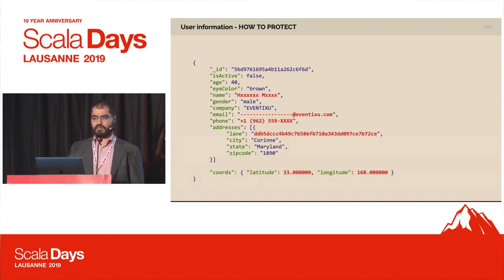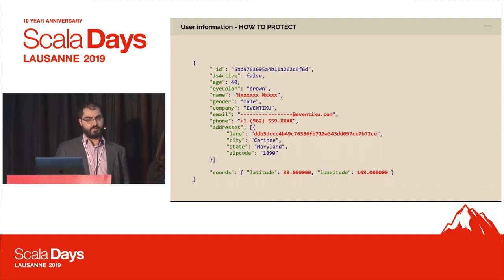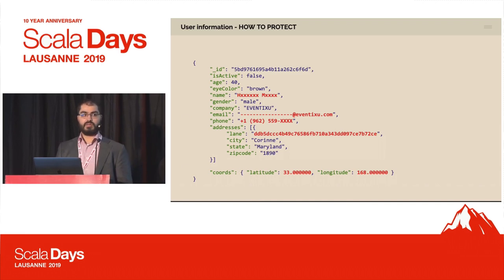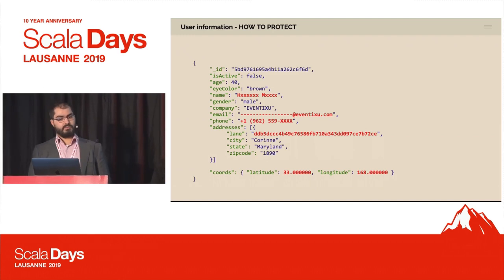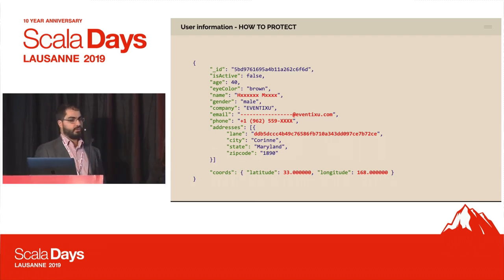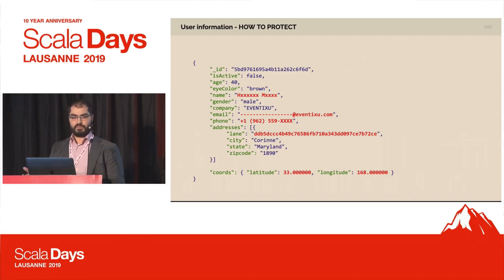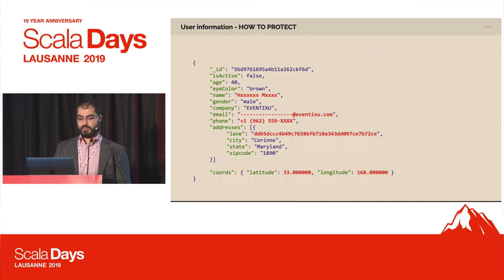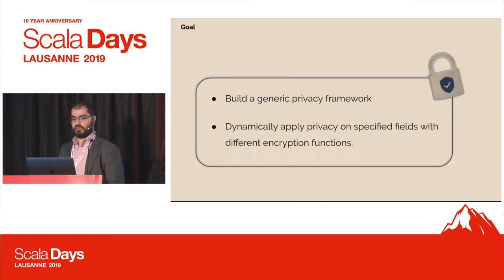When we say protecting, there are many ways to protect information. In order for data science processes to work, sometimes we don't want to anonymize or hash everything. We might want to encrypt a company with a hashing mechanism, encrypt the lane with a hashing mechanism, but maybe mask the person's name using a .xxx pattern, keeping the first or last letter. For emails, we might want to keep the domain name. These encryption functions are dependent not on the type of the field — just a string — but on the deeper semantic meaning of what that information represents. Our goal is to build a generic privacy framework that can dynamically apply privacy on specified fields with different encryption functions.